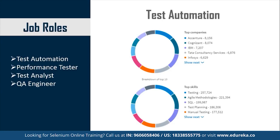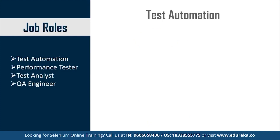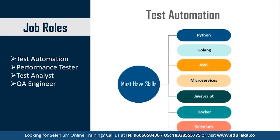The top skills required to become a Test Automation Engineer include knowledge of testing, Agile Methodologies, SQL, Test Planning, and manual testing. Apart from these, you need to be well acquainted with programming languages like Python, Golang, and JavaScript. You also need to be well versed with AWS, Microservices, Docker, and Selenium. These skills will help you move to a higher position as a Test Automation Engineer and also aid your appraisal.